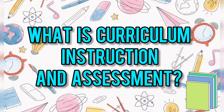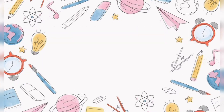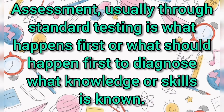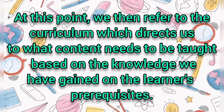What is Curriculum, Instruction, and Assessment? Assessment, usually traced under testing, is what happens first — or what should happen first — to diagnose what knowledge or skills are known. At this point, we refer to the curriculum which directs us to what content needs to be taught based on the knowledge we have gained on the learners' prerequisites.